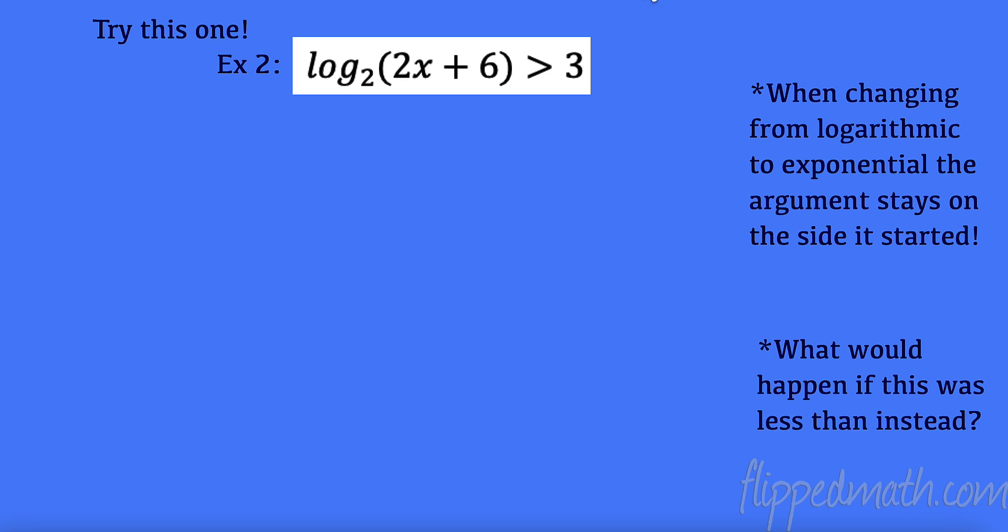All right, let's take a look at this one. Now we have a situation where we have constants and we have logs. If you remember, we want to get the logs on one side, and we want to create an exponential. So here's a hot tip. All right, so when changing from logarithm to exponential, the argument stays on the side it started. So the argument's on the left-hand side of this inequality, so it's going to stay there. So I know that 2x plus 6 has to be greater than 2 to the 3rd. Boom.